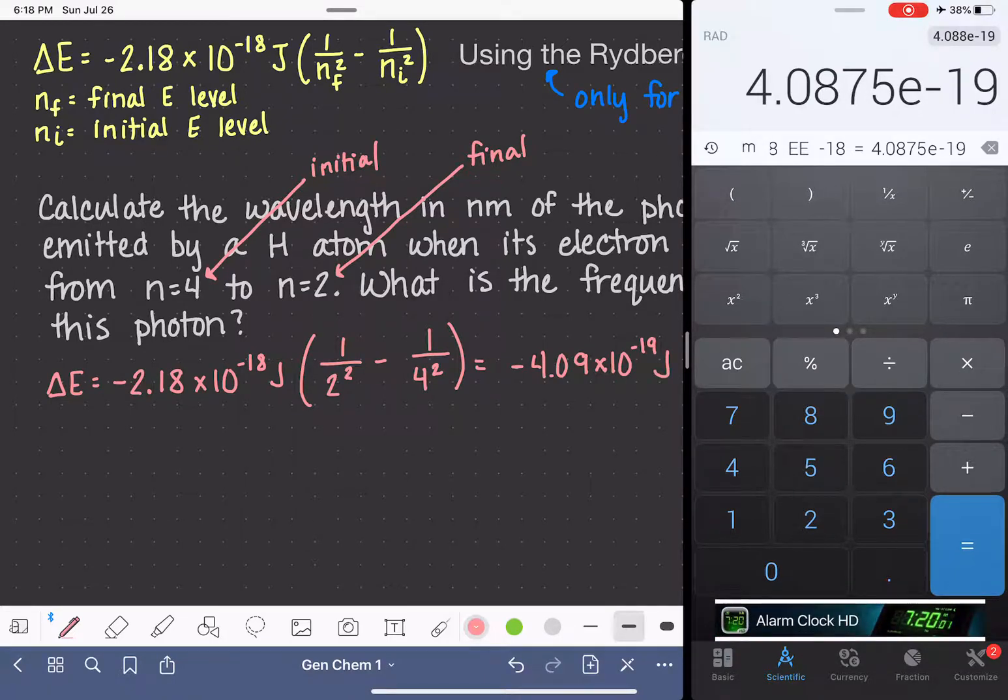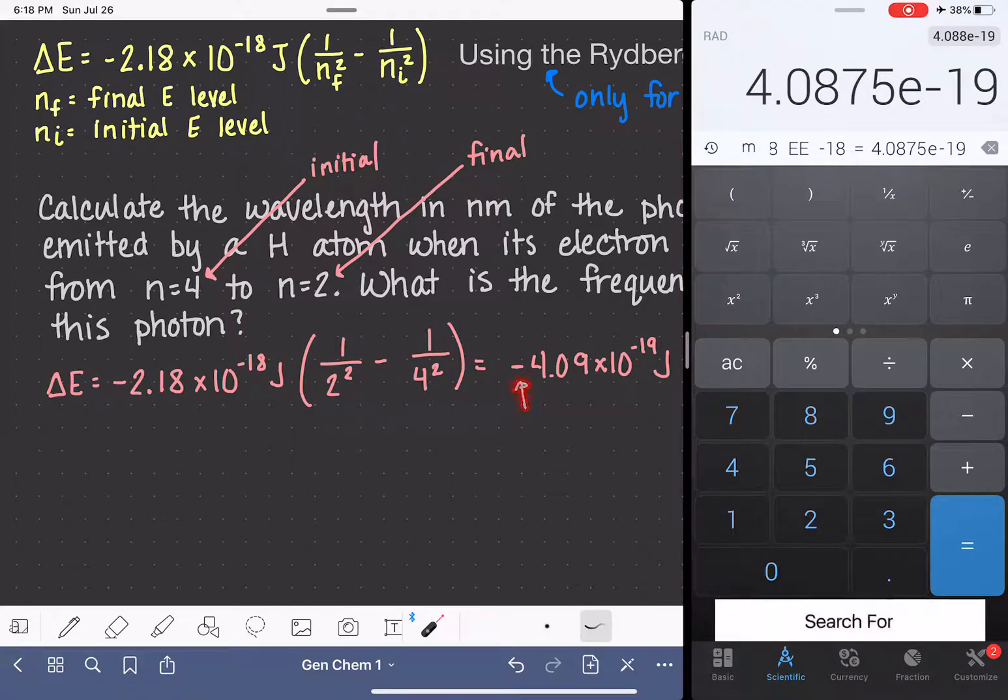So what that's telling me, let's think about what this negative sign means. What this is telling me is that my photon, or excuse me, my electron is losing energy. It's losing 4.09 times 10 to the minus 19 joules.